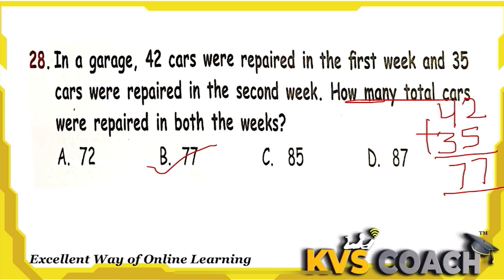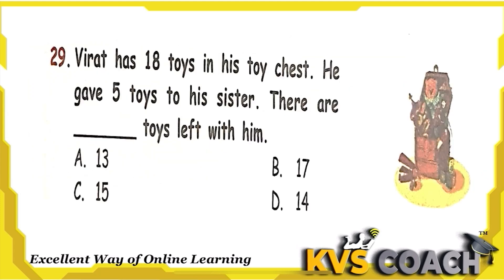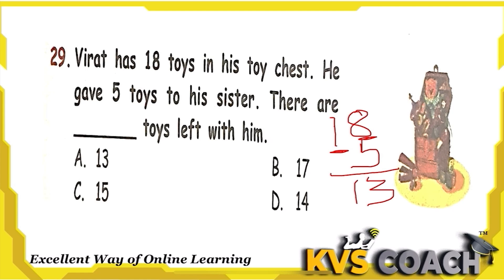The next question: Virat has 18 toys in the toy chest. He gave 5 toys to his sister. How many toys are left with him? He gave 5 away, so we subtract: 18 minus 5. 8 minus 5 is 3, and 1 minus 0 is 1. So 13 toys are left. 13 is the right answer.